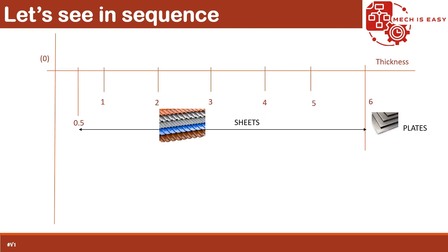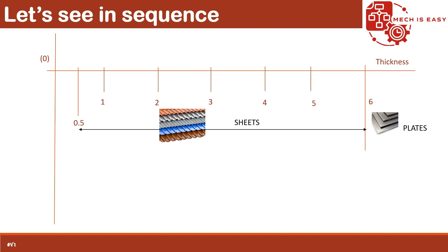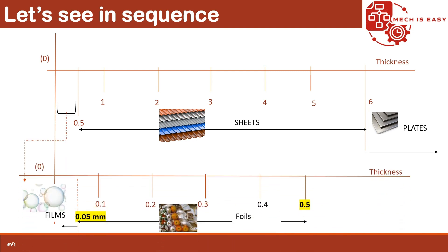Let's see that in a linear plot. Here it's a 1D plot on the x-axis, which denotes thickness in millimeters. The numbers tell the same thing as explained. Sheets and plates can be seen in the upper plot, and a zoomed plot shows the proper relation between sheet and foils as well.